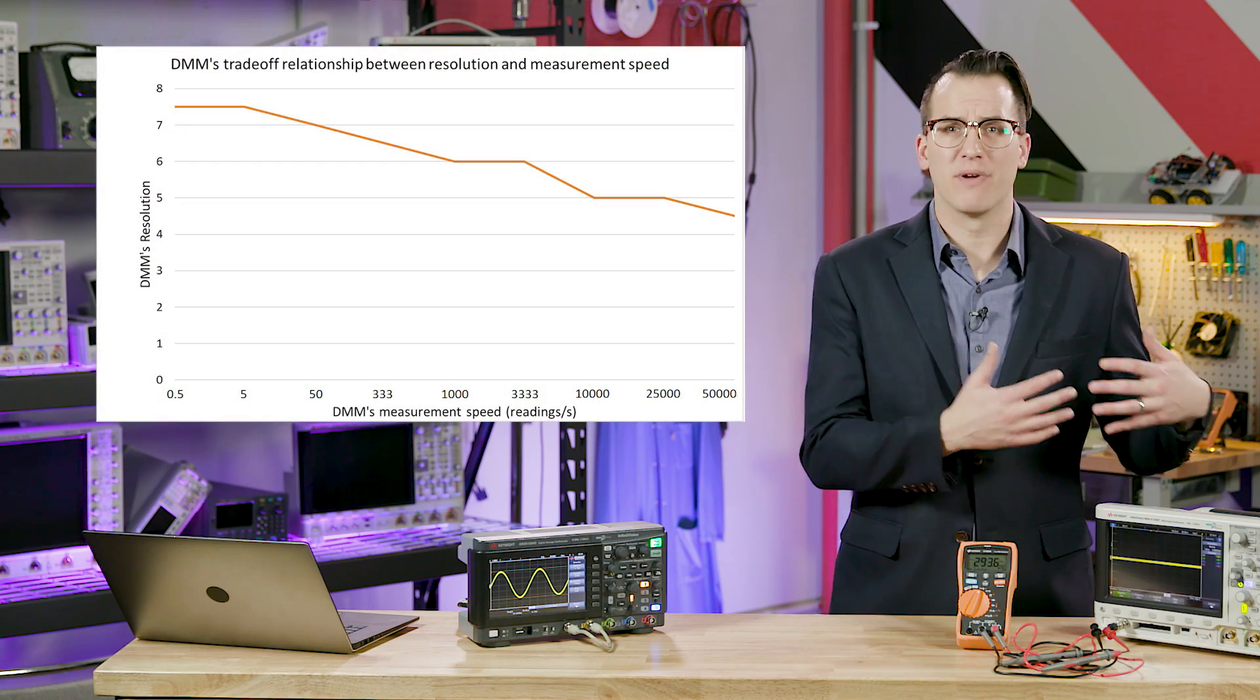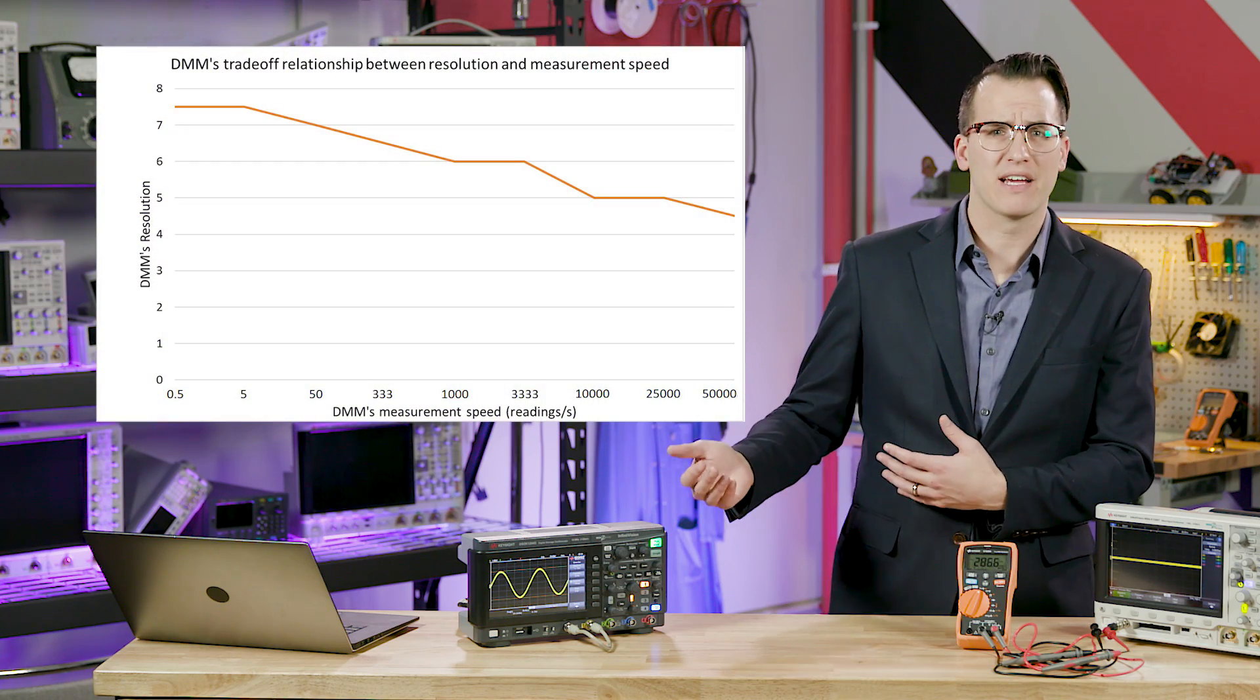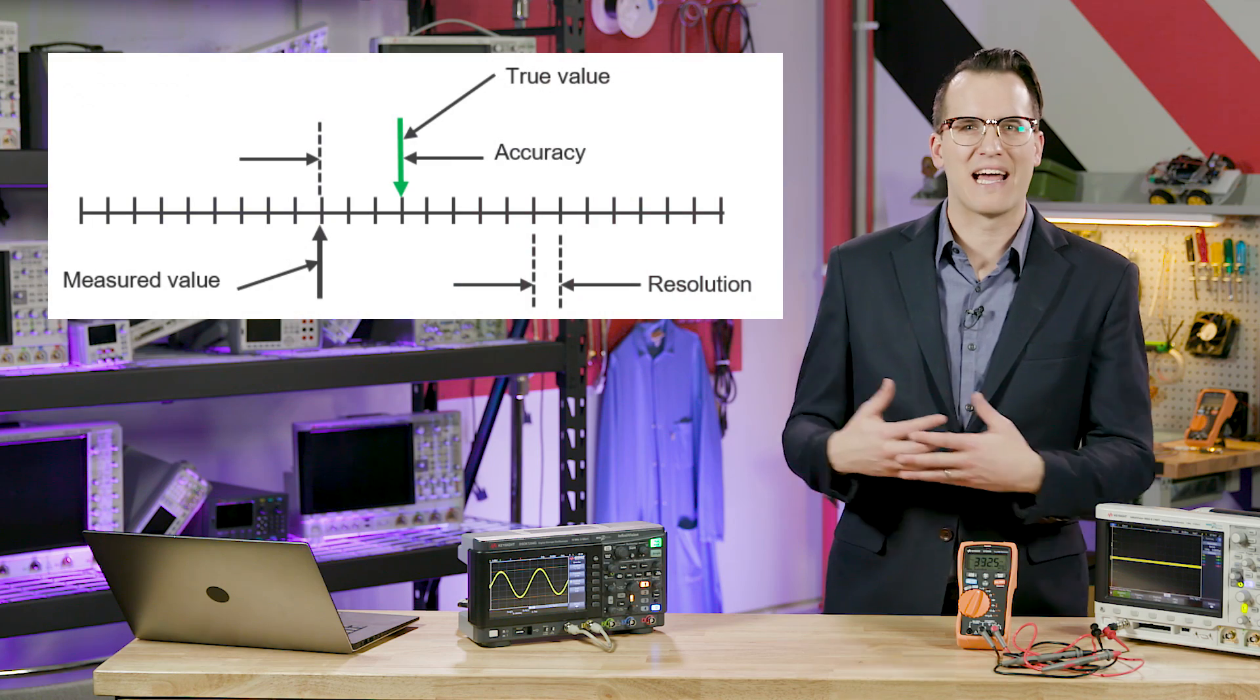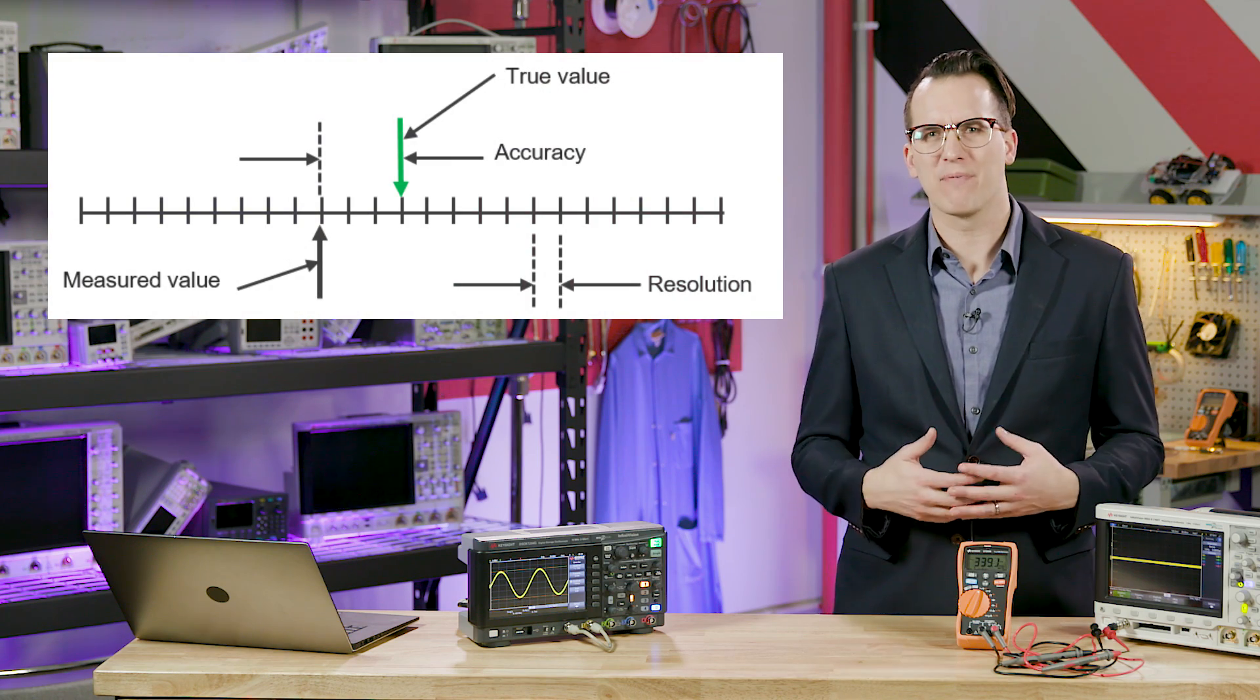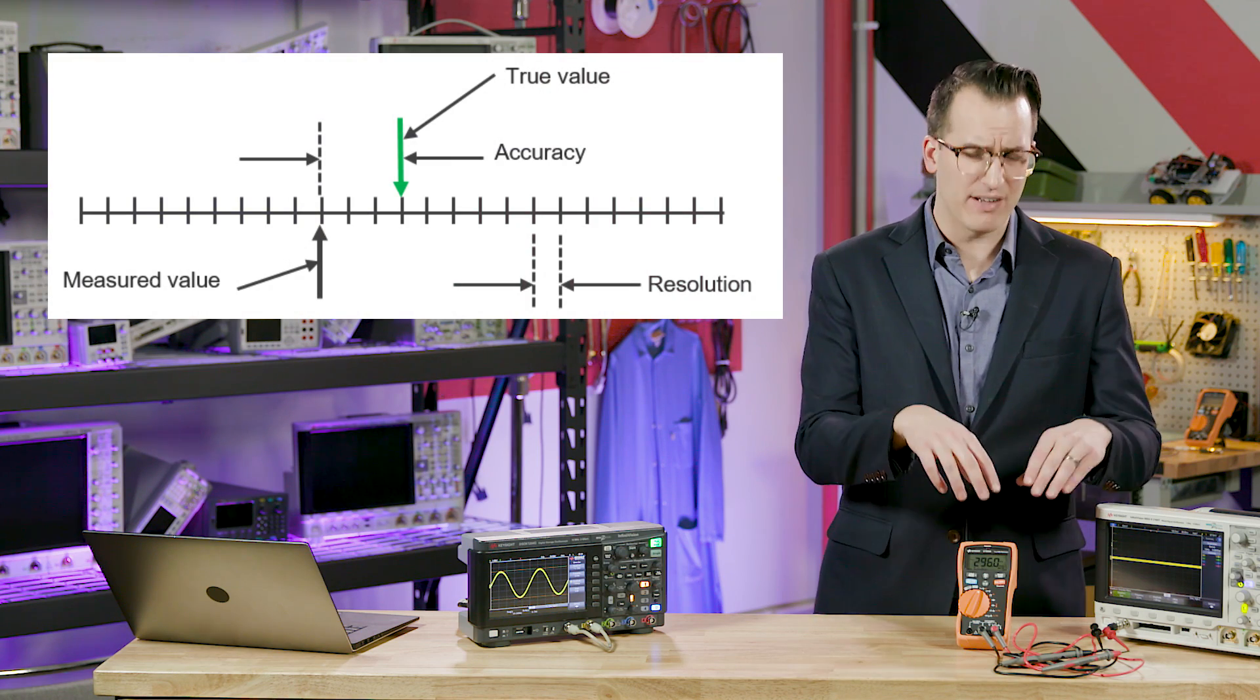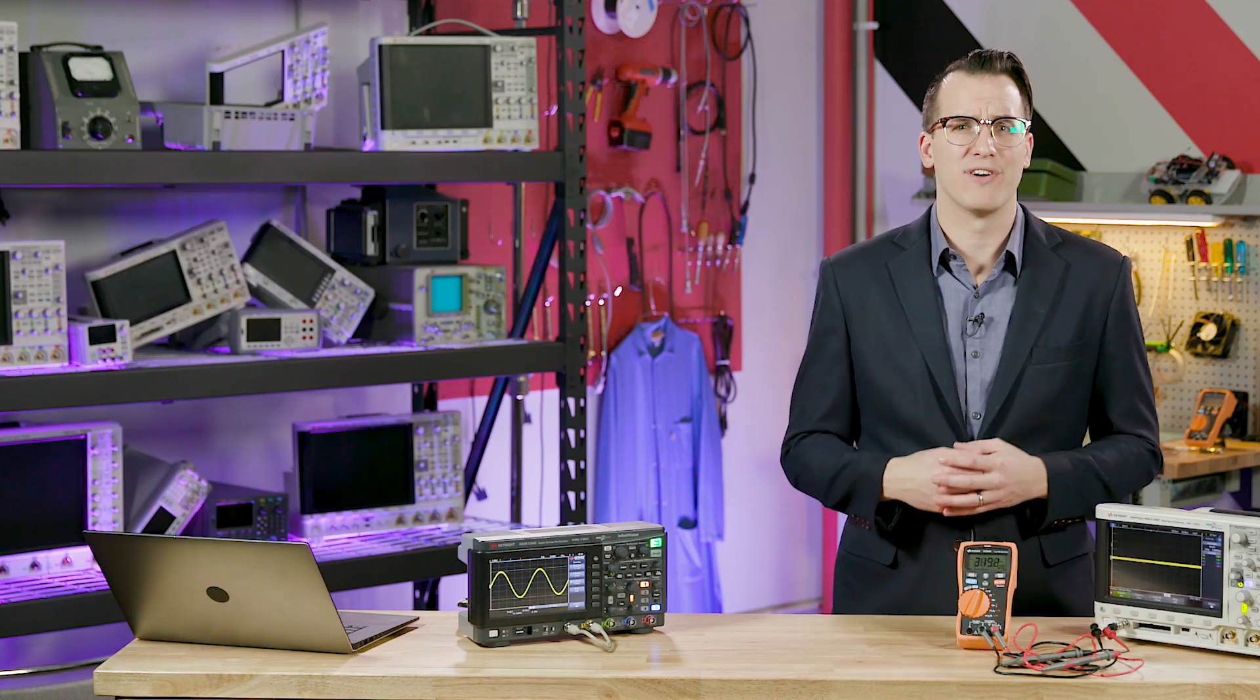So you can see why this might cause some confusion, and hey, why even use fractions at all? Well, that's what's been used historically, and depending on who you ask, that's what most engineers understand. It's also worth pointing out that the counts can be different depending on what DMM function is being used. This leads into a discussion about DMM measurement speed, or how many readings per second it can make, and DMM resolution and accuracy, which is basically how specific a measurement can actually be on a DMM, but that's a topic for another video.